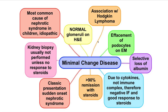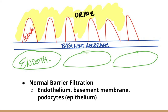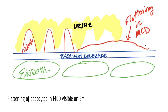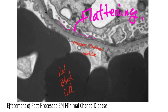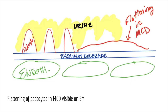There is an association with Hodgkin lymphoma, and what you see on electron microscopy is the effacement of podocytes. So comparing the normal to minimal change disease, you'll see a flattening of the podocytes. Here is an actual image — this is the capillary side, here's the basement membrane, and you can see a flattening of these podocytes. Usually they should be more raised, but in minimal change disease they flatten out.